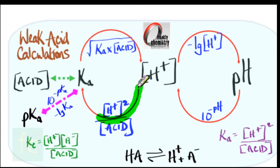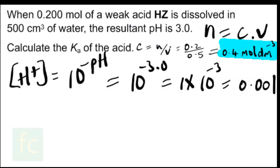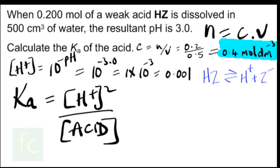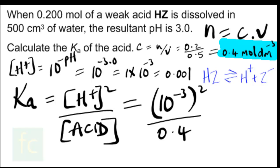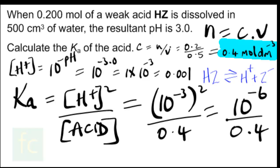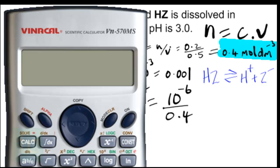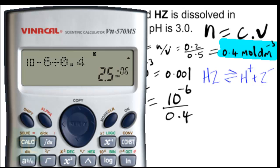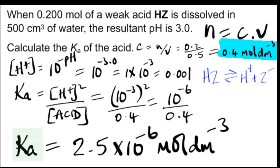With the concentration of hydrogen ions and the concentration of the acid, we can work out Ka. The expression for Ka is [H⁺]² over the concentration of acid: (10⁻³)² over 0.4. 10⁻³ squared is 10⁻⁶, so Ka = 10⁻⁶ divided by 0.4. Entering that into the calculator gives 2.5×10⁻⁶ mol dm⁻³ — that is the acid dissociation constant Ka.